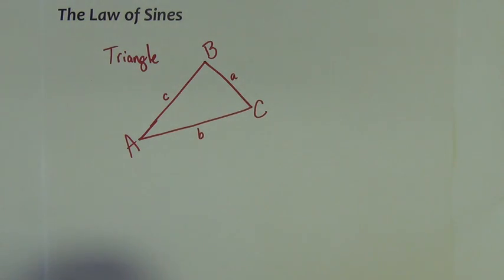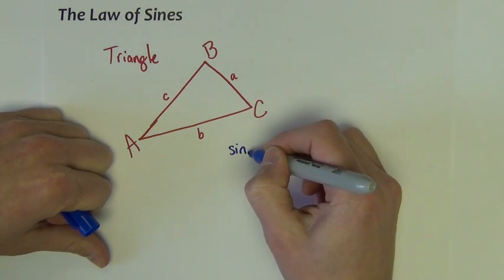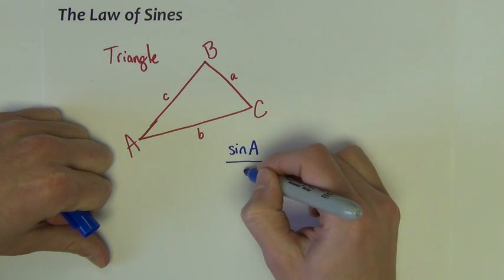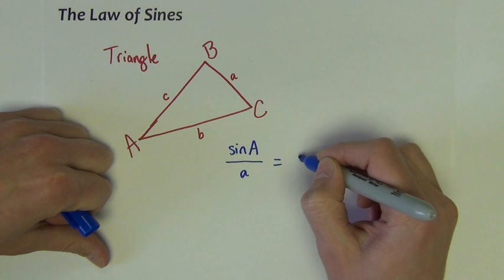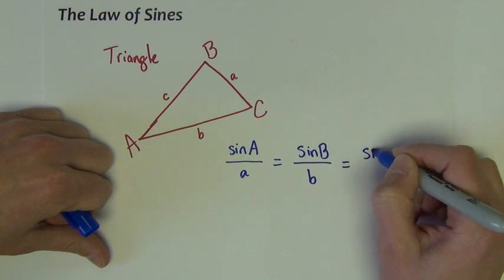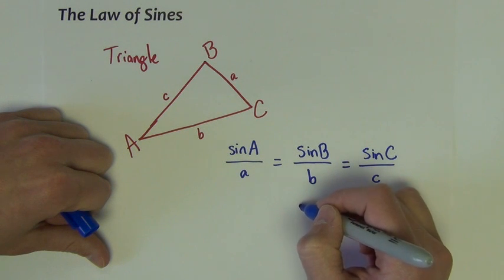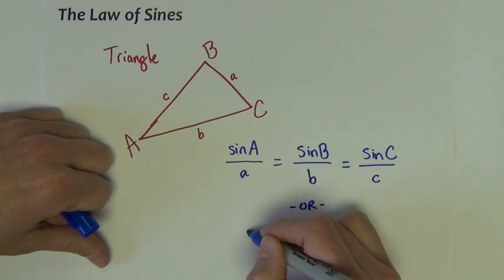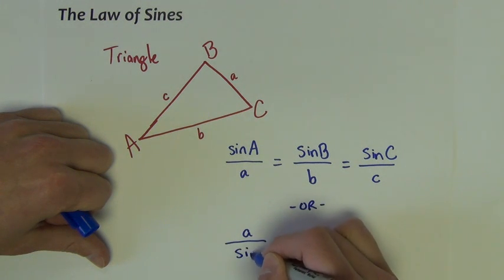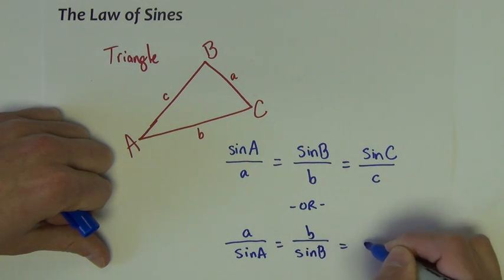Law of sines states the following fact is true: that the sine of angle A divided by a, that ratio is equivalent to the sine of angle B divided by b. It's also equivalent to the sine of angle C divided by c. Or, the reciprocal is also true. A divided by sine of A is equal to side b over sine of b. That's equal to side c over sine of c. This is the law of sines.